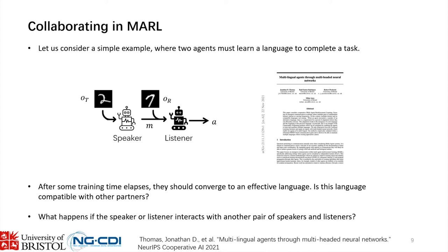These are sometimes referred to as idiosyncratic conventions — highly specialized conventions that arise between two agents. We considered this in a paper where we look at interactions between established pairs of speakers and listeners, and observe that a phenomenon called catastrophic forgetting can occur when you change these partners. Effectively, when an agent adapts to a new partner, that represents a data distribution shift, and it can forget its previously established language. We propose a simple methodology to overcome this.